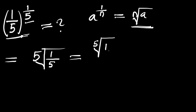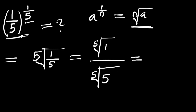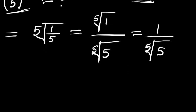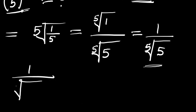This simply means we are going to have the fifth root of 1 divided by the fifth root of 5. Meanwhile, the fifth root of 1 is simply 1, so we have 1 divided by the fifth root of 5.